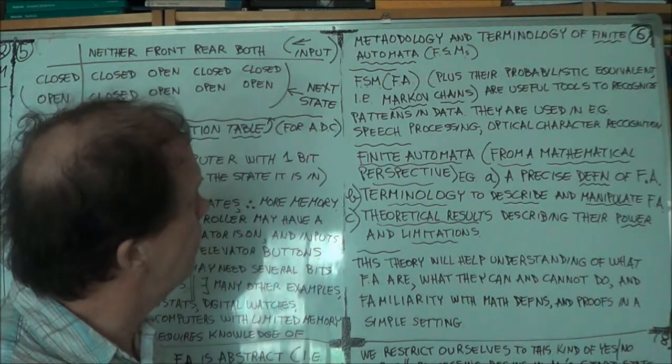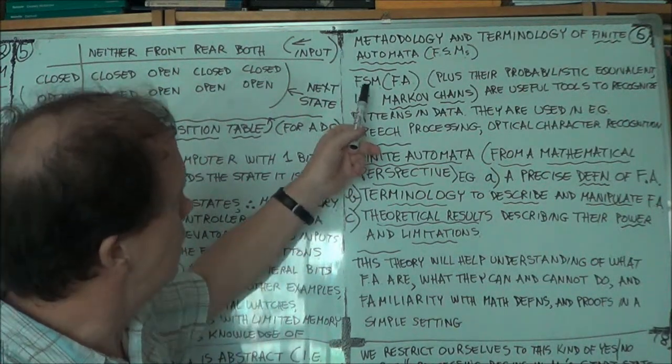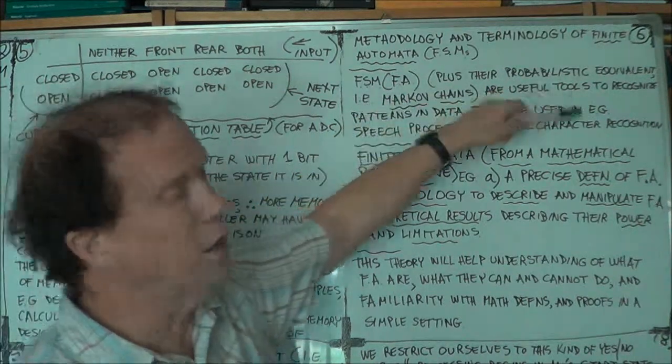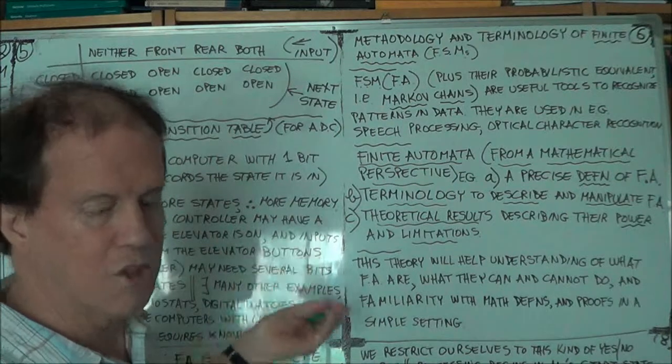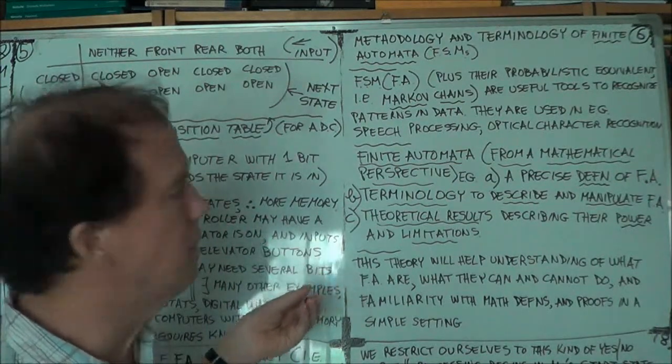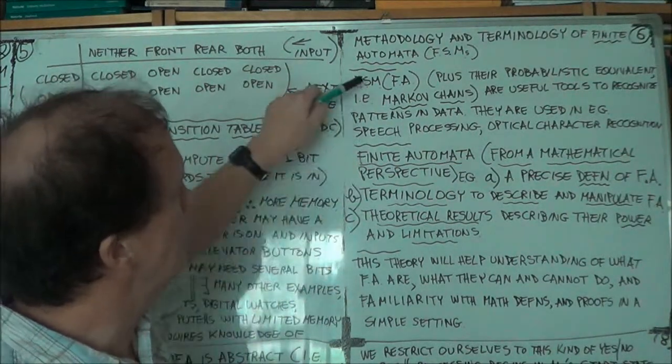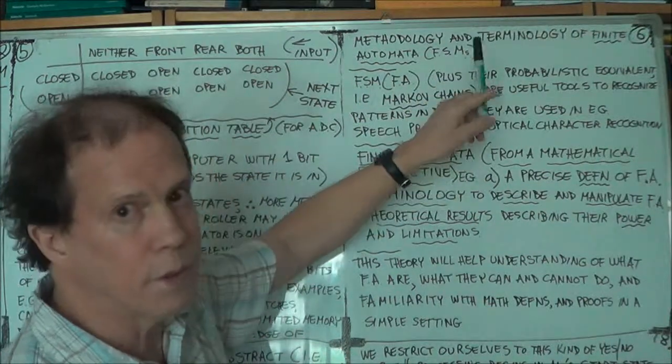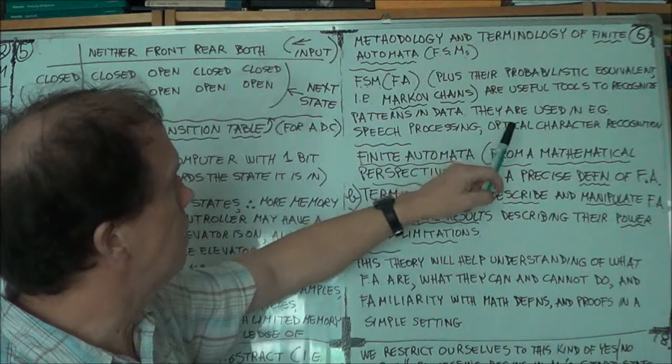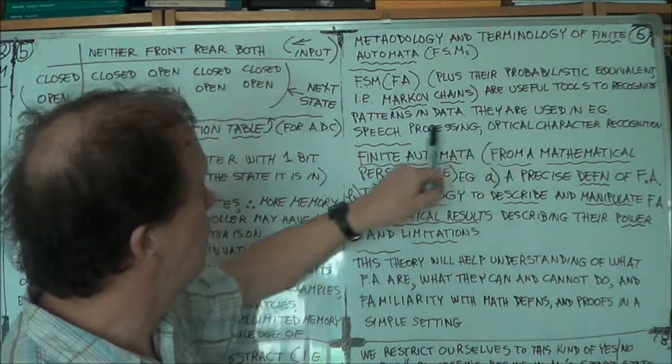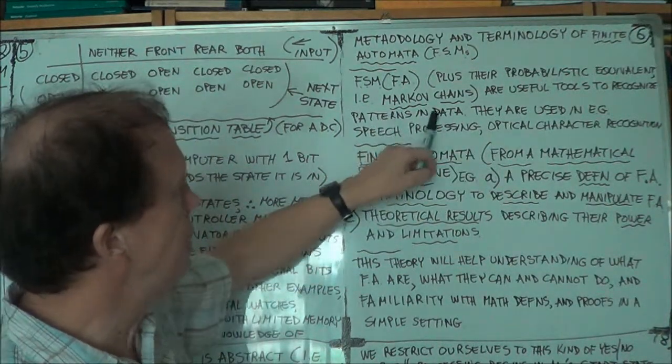Now, these finite state machines, they can have other purposes. We've been talking about electro-mechanical type devices, so far. But they can be used for other very useful applications, purposes. For example, they might be used to recognize patterns in data.